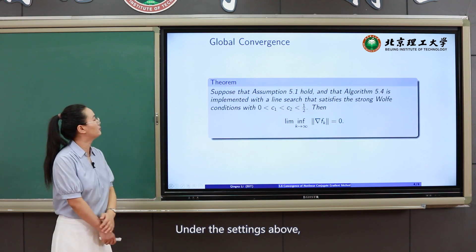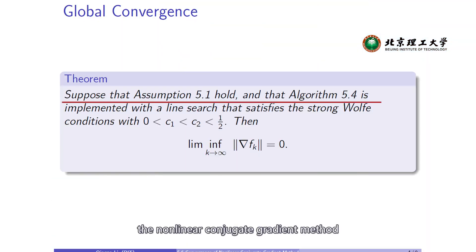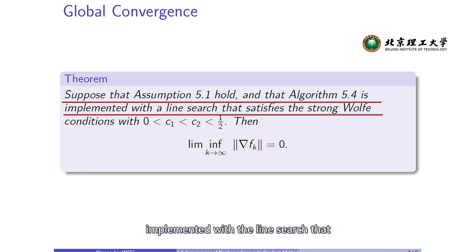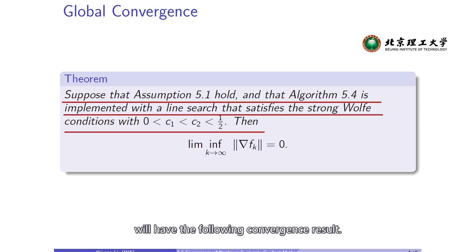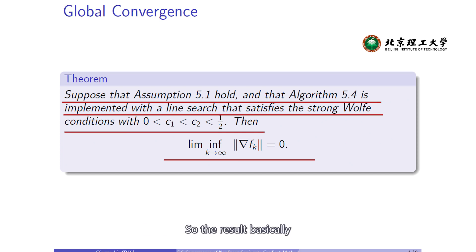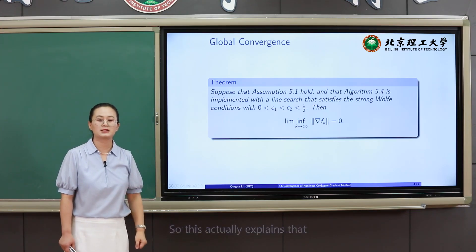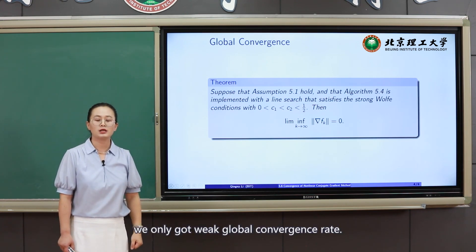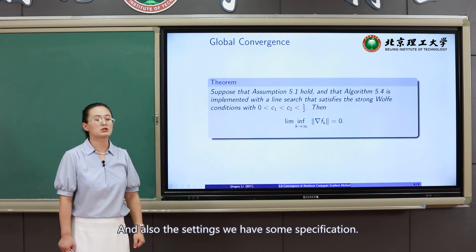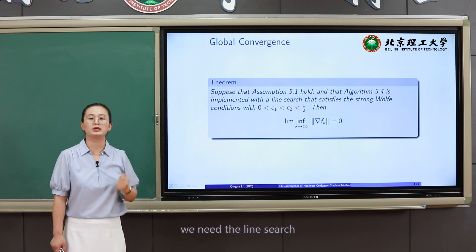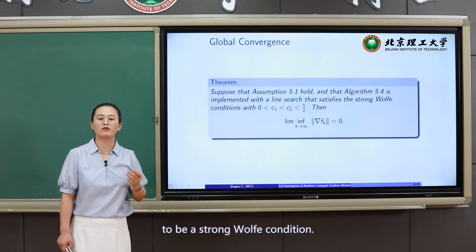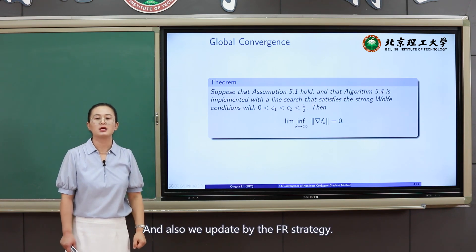Under the settings above, we can show that the nonlinear conjugate gradient method implemented with a line search satisfying the strong Wolfe conditions will have the following convergence result. The result is a weak global convergence result: there is a subsequence of the gradients whose norm will converge to zero. This explains that for the nonlinear conjugate gradient method, we only obtain weak global convergence. The settings also require the FR update strategy.